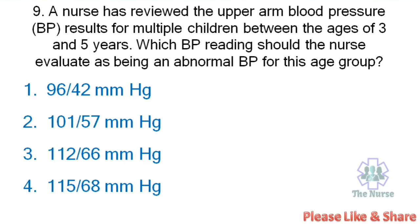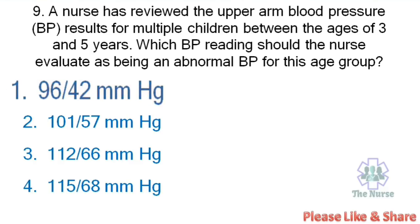Next question: A nurse has reviewed upper arm blood pressure results for multiple children between the ages of 3 and 5. Which BP reading should the nurse evaluate as abnormal for this age group? Options: 96/42 mmHg, 101/57 mmHg, 112/66 mmHg, 115/68 mmHg. Here, the diastolic pressure of 42 is below the normal level, so it is considered an abnormal BP for this age group.